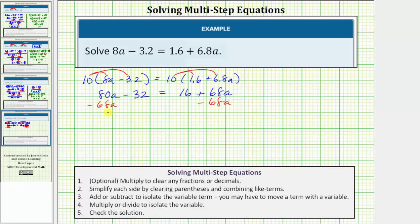And now we simplify. 80a minus 68a is equal to 12a. So the left side simplifies to 12a minus 32. On the right, 68a minus 68a is zero. The right side simplifies to 16.